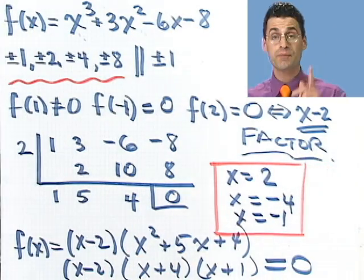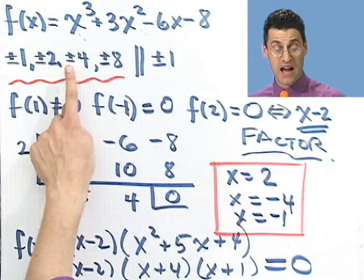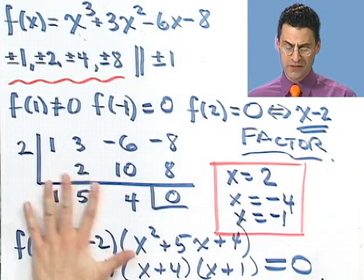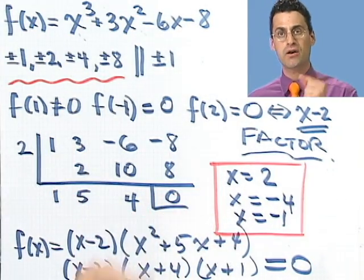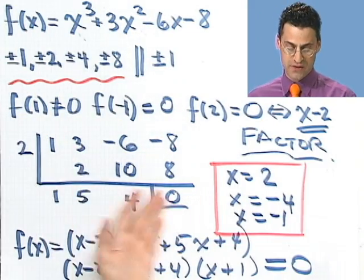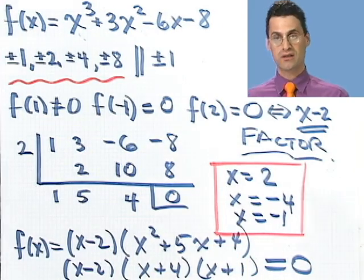But notice something. If we would have kept going on my list, I would have come across -4, and I would have uncovered that one too. So there are a lot of different ways of finding the roots, especially if a root is rational. You can really uncover it in this finite list, check, use synthetic division, see what's left over, factor, and find the zeros. Try these on your own now.